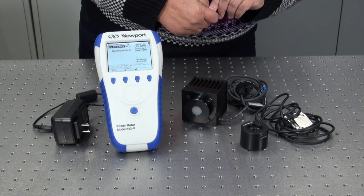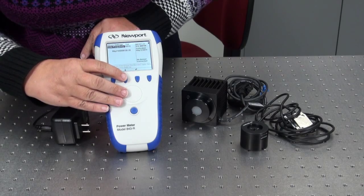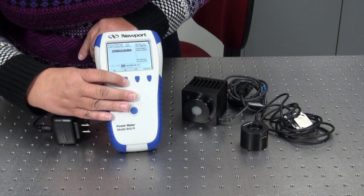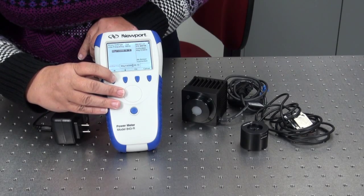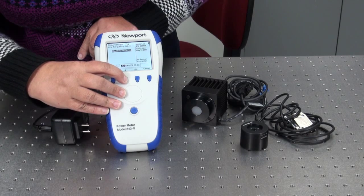For your convenience, you can also select the correct date and time. Press the down arrow to select date and time. Press the enter arrow. Use the right arrow to select the month, day, year, hour and minutes. Change the selected item with the down arrow.